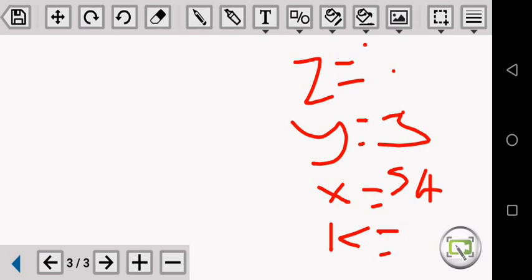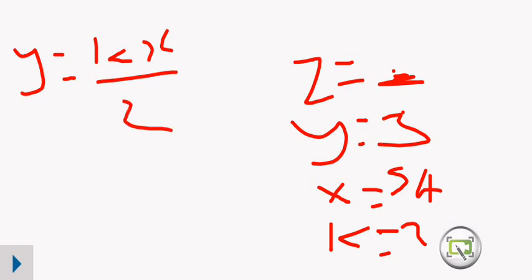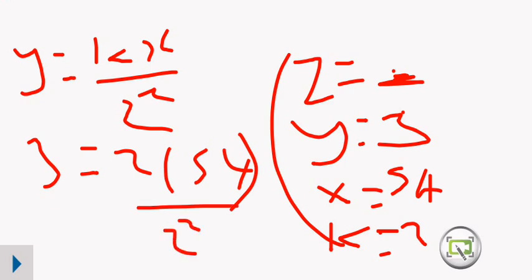Z, you don't know — it's a question mark. By knowing that our equation is Y equals KX over Z squared, and the value of K is 2. Y is 3, K is 2, X is 54, over Z squared. So 3 times Z squared — that is 3Z squared — equals 2 times 54, which is 108.